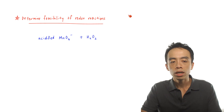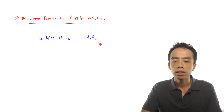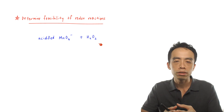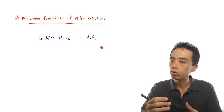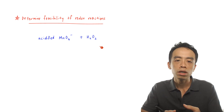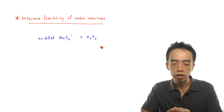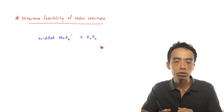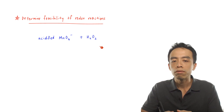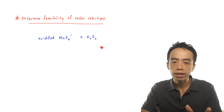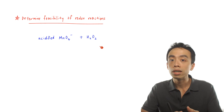Let us have an example involving acidified MnO4⁻ plus H₂O₂. If I'm adding acidified permanganate with hydrogen peroxide, we want to determine the feasibility of this redox reaction. Before we determine the feasibility, we have to figure out what the redox reaction is in the first place. We will first deduce what is the most likely redox reaction that will occur, then subsequently determine the feasibility of that.